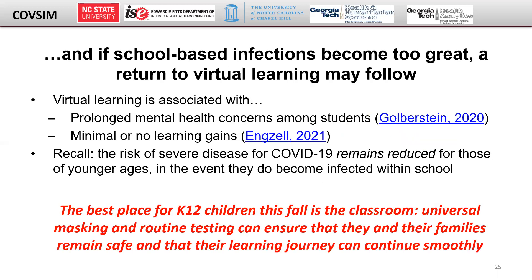Finally, as school-based infections become too great, schools will likely return to virtual learning. As many have experienced personally, virtual learning is far from ideal and has been associated with poor mental health outcomes among students and limited learning gains. For parents fearful of children returning to in-person classrooms, it is important to recall that if a student were to get infected, their likelihood of experiencing severe disease is minimal. The clearest solution is to encourage universal masking and, where resources are available, to frequently test students and isolate those who are infected appropriately. Children belong back in the classroom, and masks and testing can ensure this is a safe space for all.